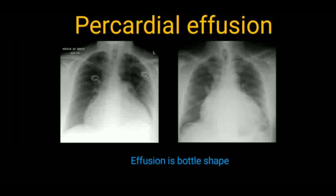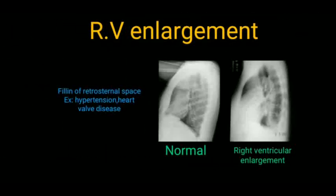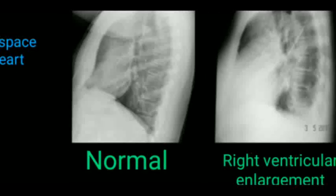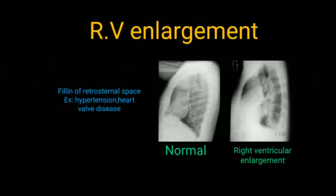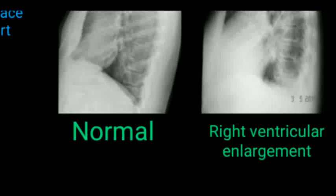Regarding right ventricular enlargement in the lateral view — filling of the retrosternal space is seen, for example in hypertension or heart valve disease. In this we see boot-shaped heart in the AP view. In a normal X-ray the retrosternal portion is clear, but in right ventricular enlargement there is opacity in this area as the retrosternal space is filled by the right ventricle.